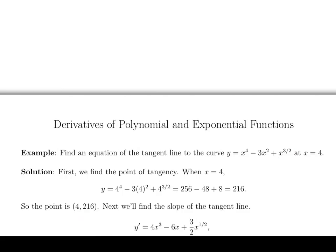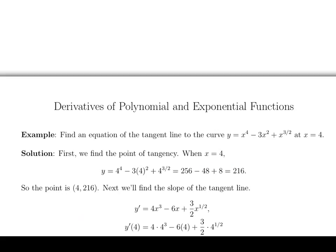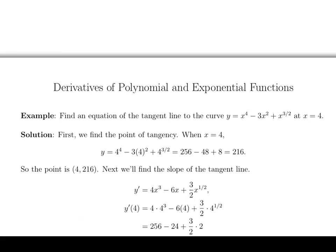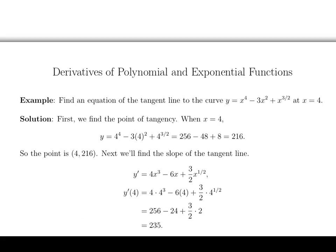Now that we have an expression for the derivative, let's plug in x equals 4 and that's going to give us the slope. So if we plug in the 4, we'll get y prime of 4 is equal to 4 times 4 cubed minus 6 times 4 plus 3 halves times 4 to the 1 half. And then we're going to work out what all this is. So if we simplify a little, we'll get this. And finally, we end up with 235 if you work out all of that.